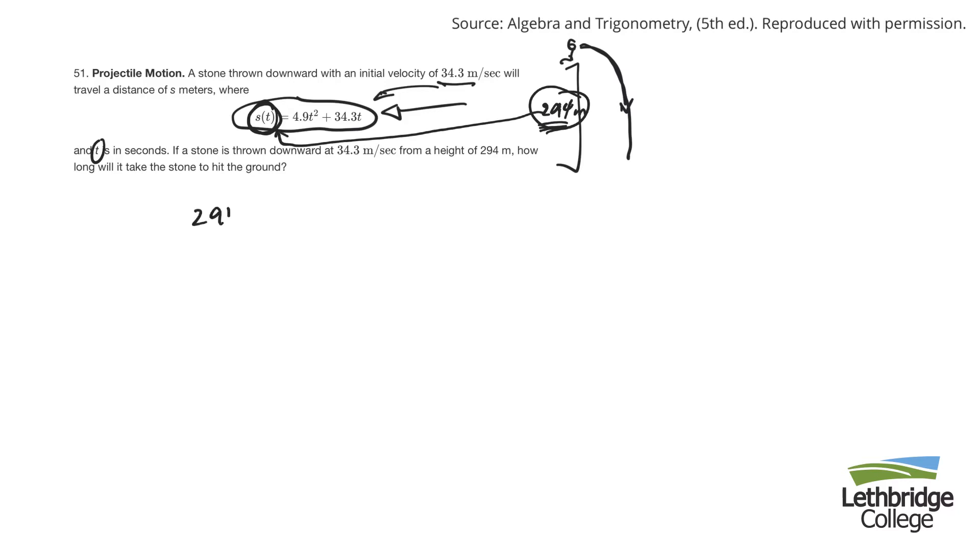So I'll have 294 equals 4.9 T squared plus 34.3 T. It's a quadratic, so I'm going to bring everything over to one side and make it equal to 0. So 0 equals 4.9 T squared plus 34.3 T minus 294.